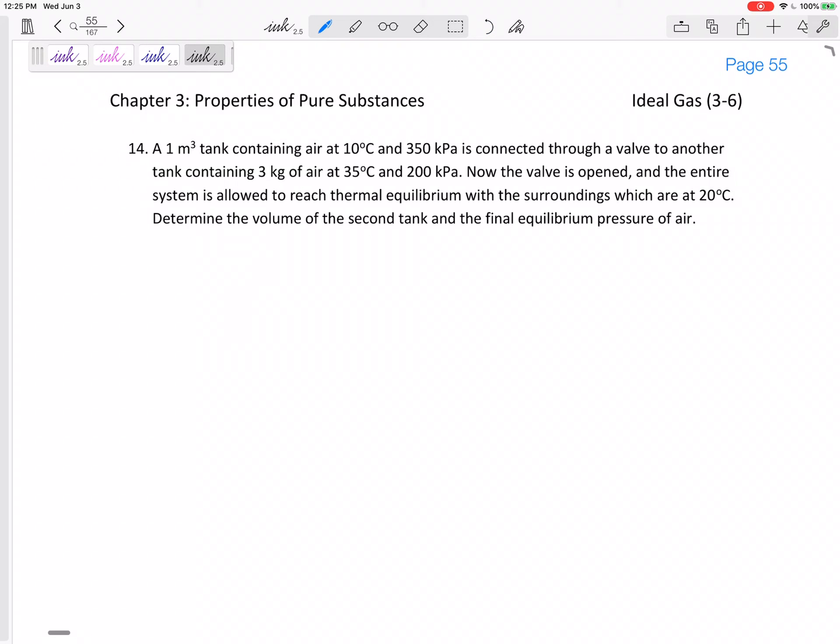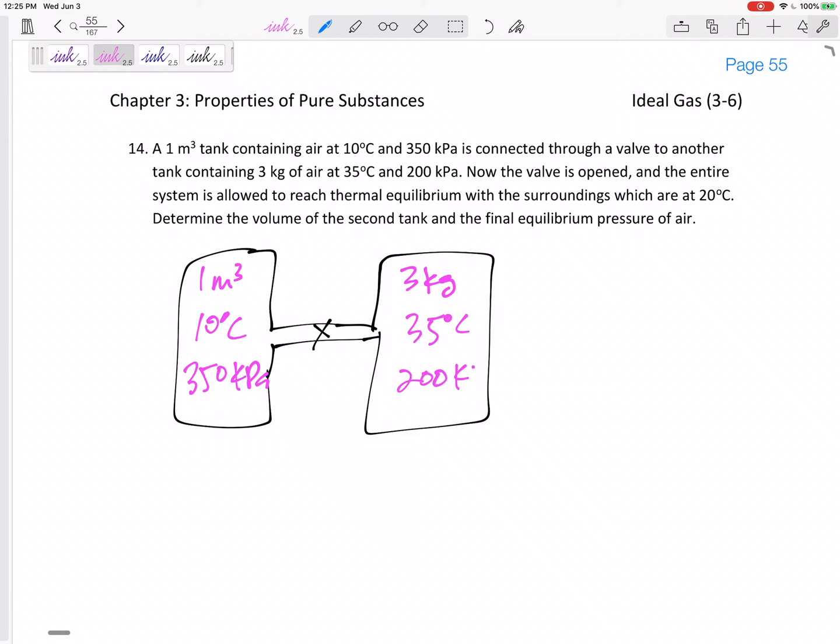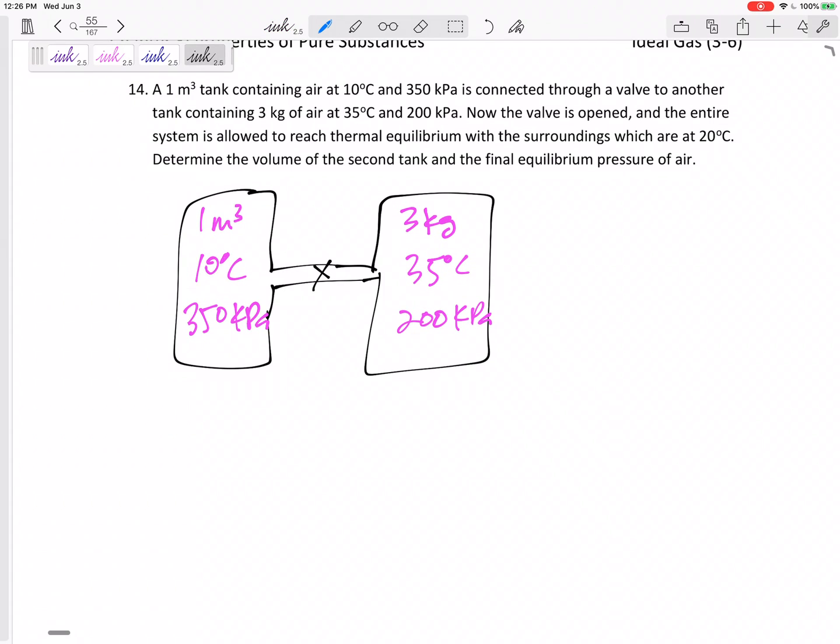All right, so we have two separate tanks that are closed off. They're connected by a valve. This one over here, 1 m³, 10°C, 350 kPa. That's all we know about that first one. This other one is 3 kg, 35°C, 200 kPa. The valve is opened. So this is kind of state one, state two.